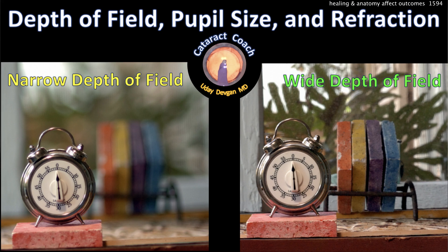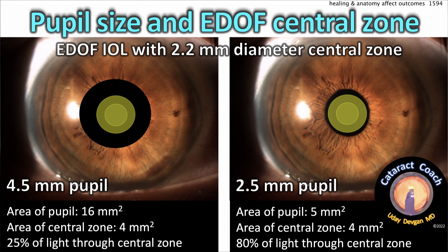While the pupil size does tend to decrease with age — and that's helpful to increase the depth of field — there can still be considerable variation among patients. A larger pupil allows more light to enter the eye, but also lessens the depth of focus within the eye and the depth of field in the patient's view of the environment. When considering refractive targeting for lenses with central focusing elements such as extended depth-of-focus lenses, the pupil size can help determine where to aim. For a patient with a larger 4.5mm pupil, only about 25% of the incoming light is going to go through the central zone of the lens. Whereas in a patient with a smaller 2.5mm diameter pupil, 80% of the incoming light goes through that central focusing element.